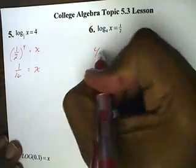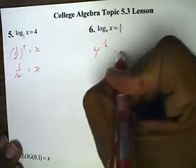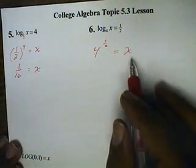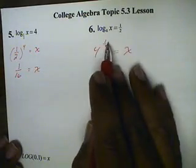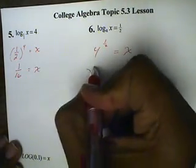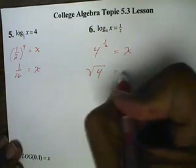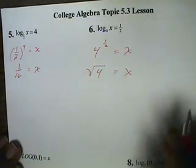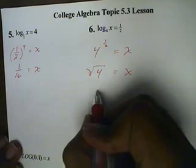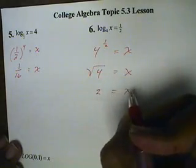Here, we have a base four raised to the one-half power, and that equals x. We're going to convert this exponential into a root. So this will be the square root of four equals x. And the square root of four is two. So x is two.